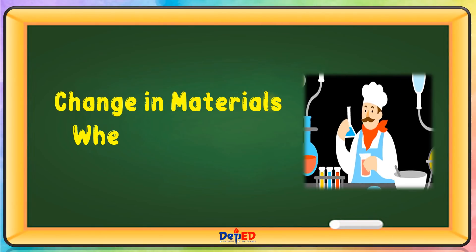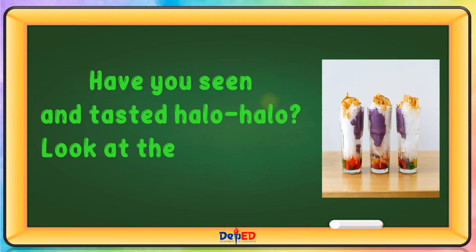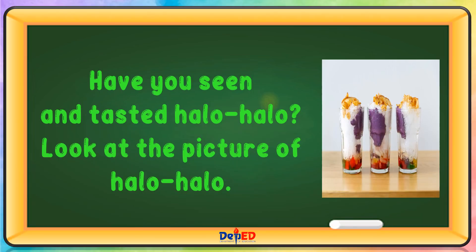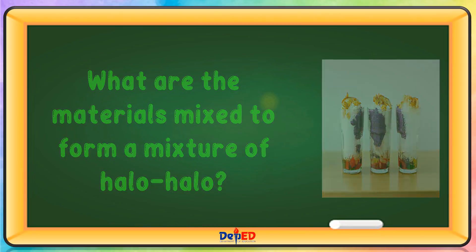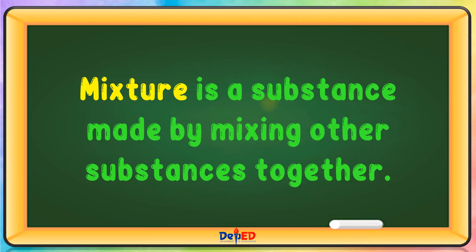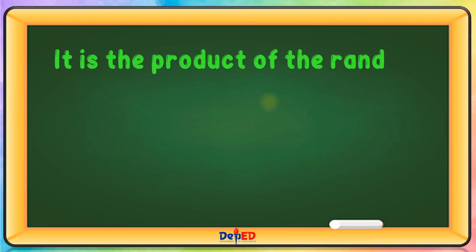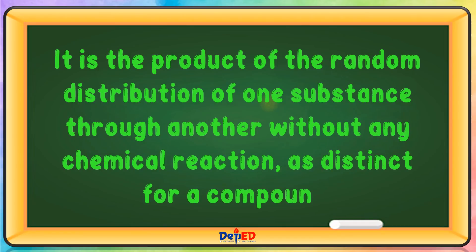Change in materials when mixed with other materials. Have you seen and tasted Halo-Halo? Look at the picture of Halo-Halo. What are the materials mixed to form a mixture of Halo-Halo? A mixture is a substance made by mixing other substances together. It is the product of the random distribution of one substance through another without any chemical reaction, as distinct from a compound.